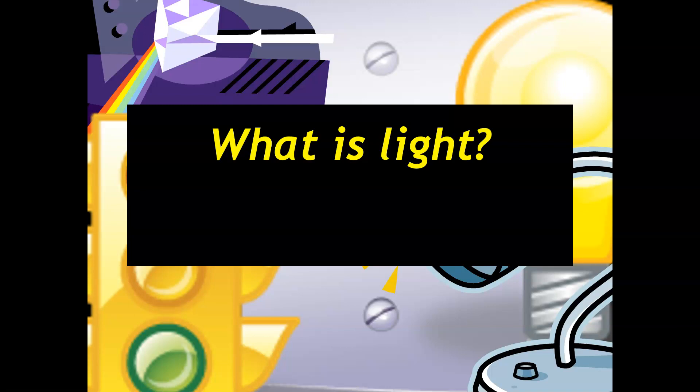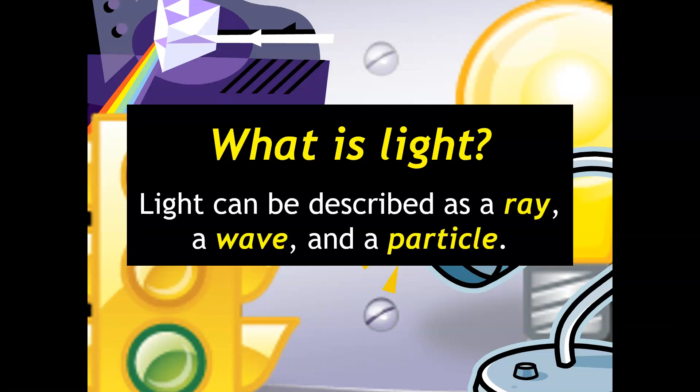So my question to you to start off this discussion is, what is light? And depending on the properties that you observe, really light can kind of fall under three major definitions. We can describe light as a ray, a wave, and a particle. So we'll first focus on the first definition, light as a ray. And by the end of this unit, we'll be looking at light as a wave and a particle.